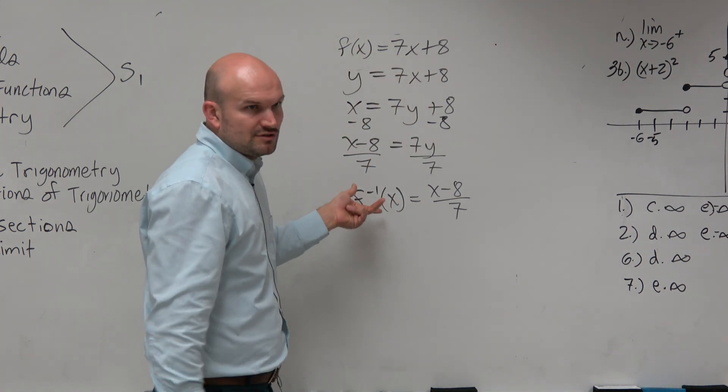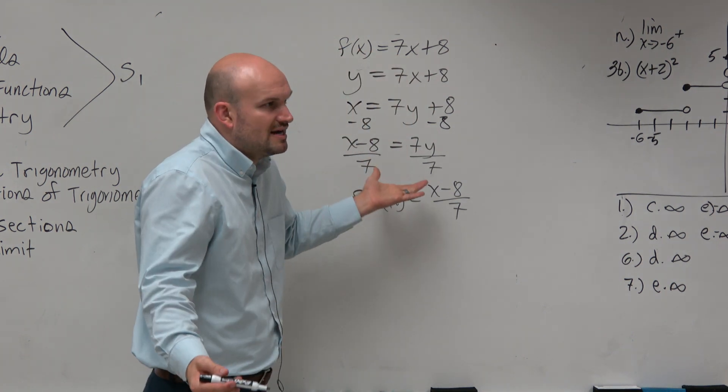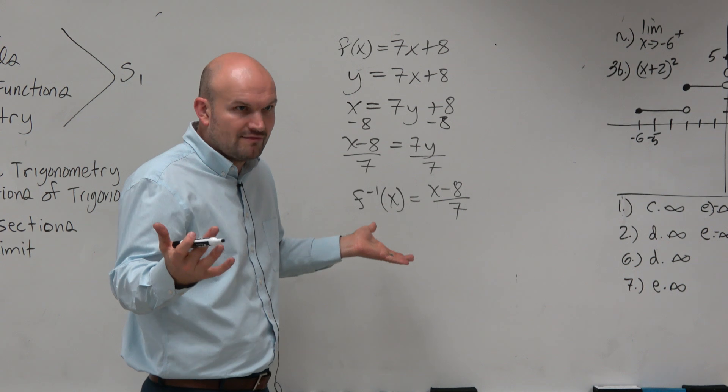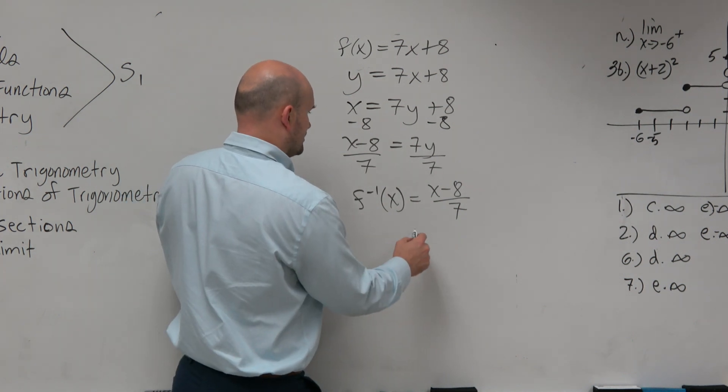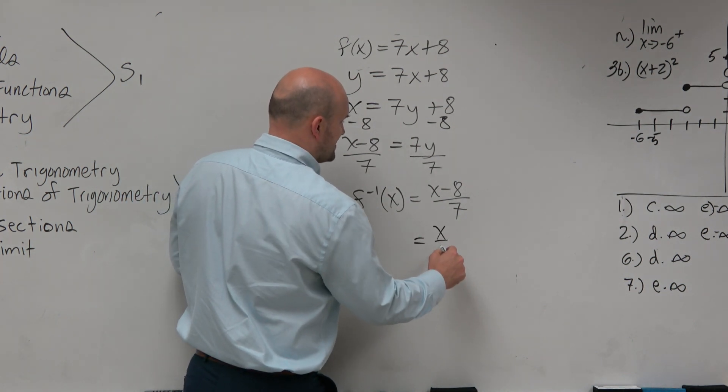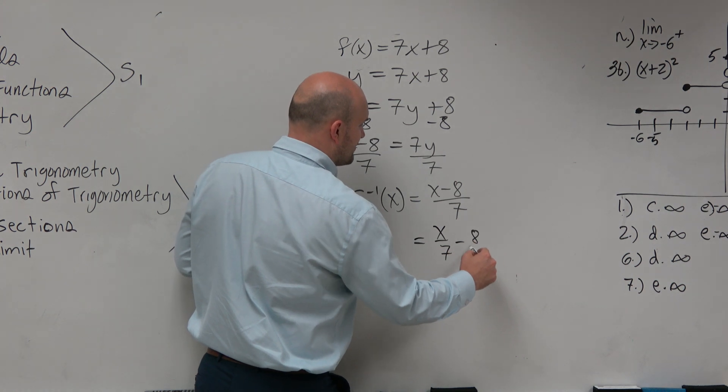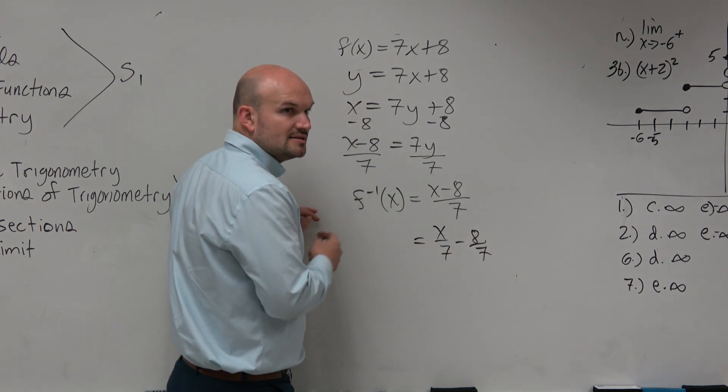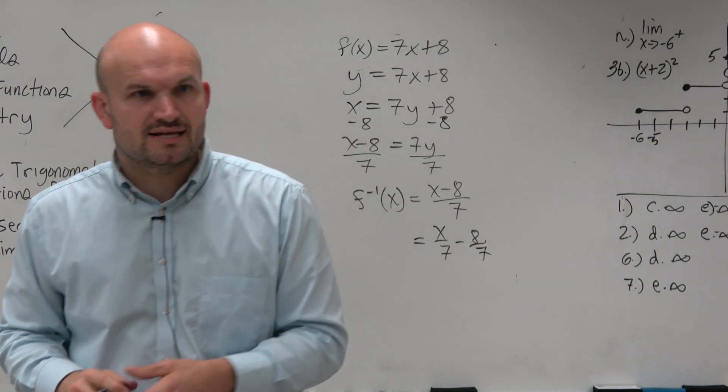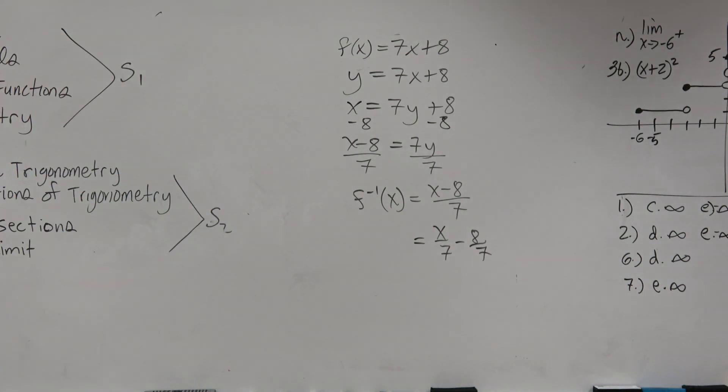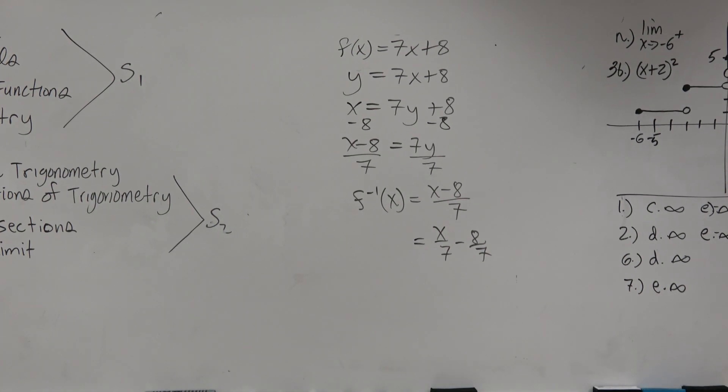They're just saying instead of inverse notation, they're going to call f inverse g of x. And you can call it h of x, k of x, whatever. Also, just a little FYI, they could also rewrite the answer like this, right? So just make sure you're aware of different ways that the answer could be displayed. Also, another way too.